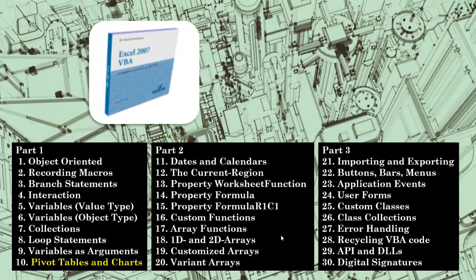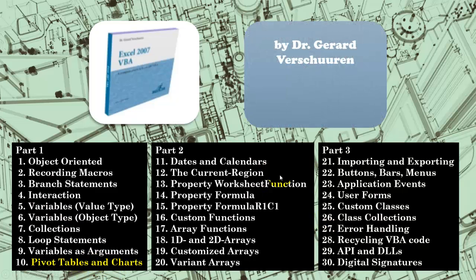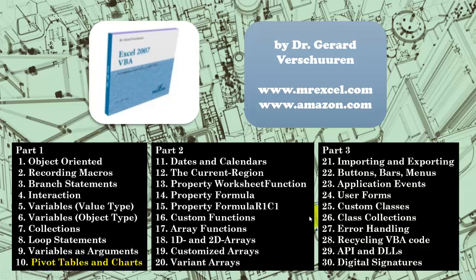Where do you find all this information? It is on my CD-ROM Excel 2007 for VBA, which has all these items extensively — more than 1500 slides. Here is the section on Pivot Tables and Charts; I cover more there than what we just discussed. You can find the CD-ROM on MrExcel.com or Amazon.com.